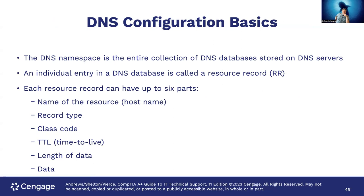DNS configuration basics: the DNS namespace is the entire collection of DNS databases stored on DNS servers. An individual entry in a DNS database is called a resource record. Each resource record can have up to six parts: the name of the resource, the host name, the record type, the class code, TTL (time to live), length of data, and the data itself.